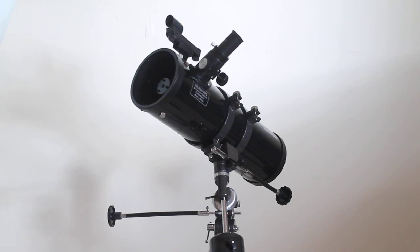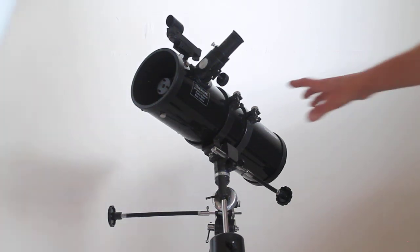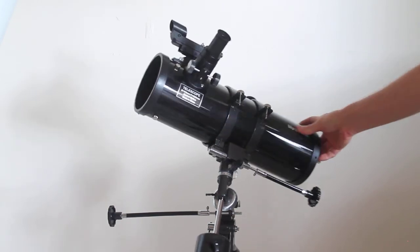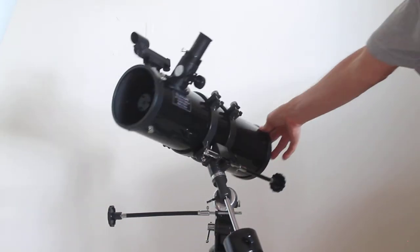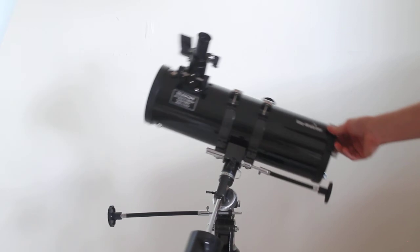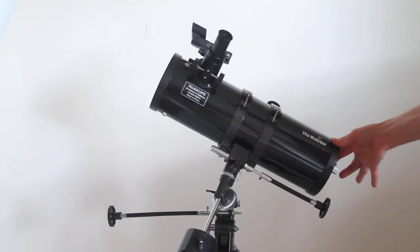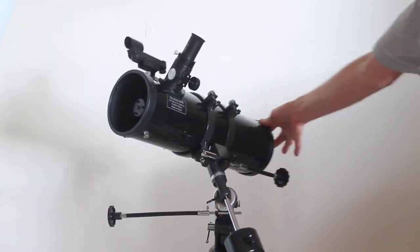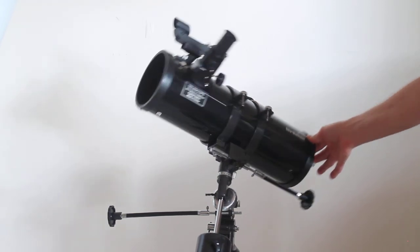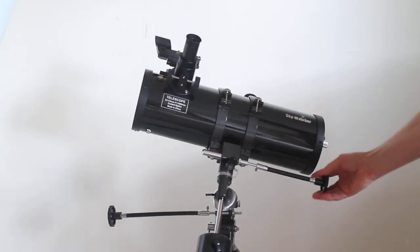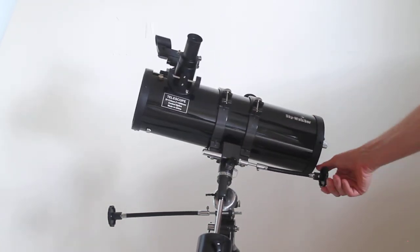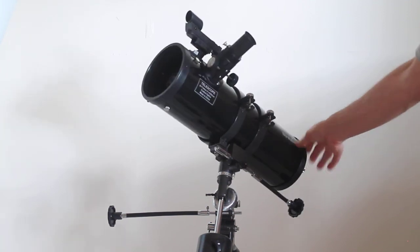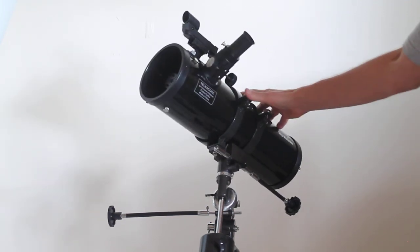Comes with the Skywatcher EQ1 mount, very easy to set up and use. As you can see, I'm hardly—that's a couple of fingers there, finger and thumb—very easy to move. And it does come with the slow motion controls for fine adjustments when you're looking through the eyepiece and you want to keep things centered in view.